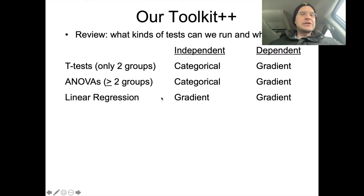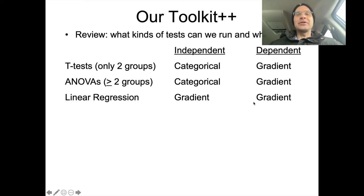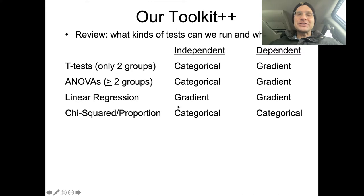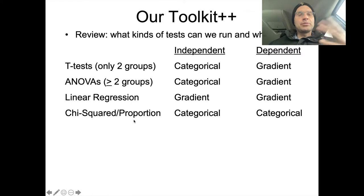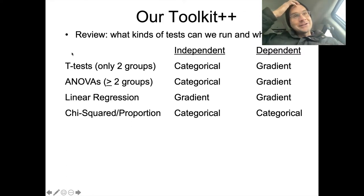We've also talked about linear regressions, which show us the connections between gradient independent variables and gradient dependent variables. And most recently, we talked about this connection between two different categorical data types. If we have a categorical independent variable and a categorical dependent variable, we can use either chi-squared tests or proportion tests, both of which we talked about last time.